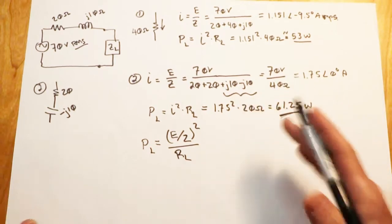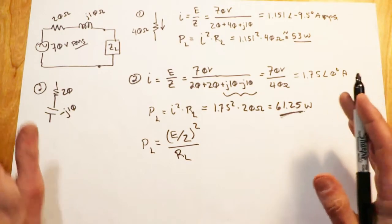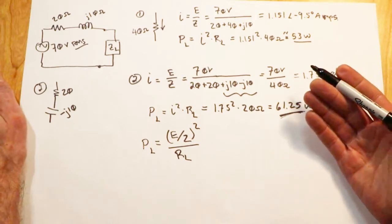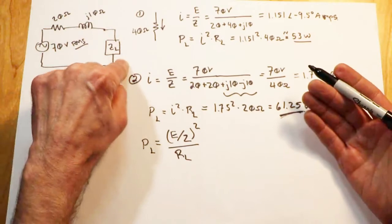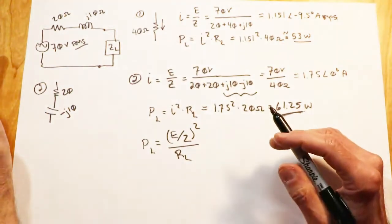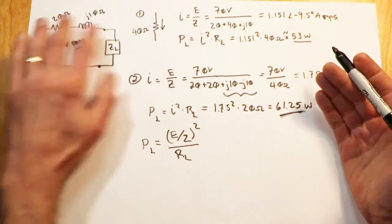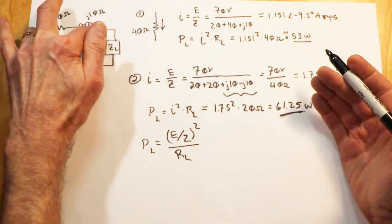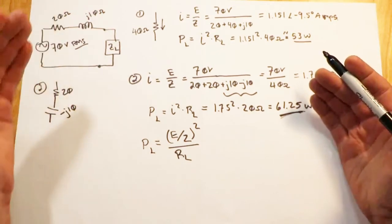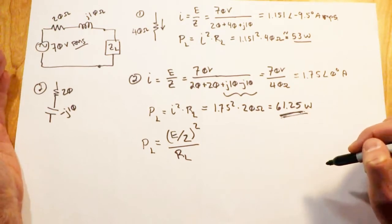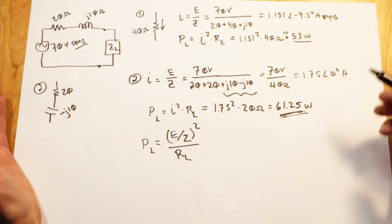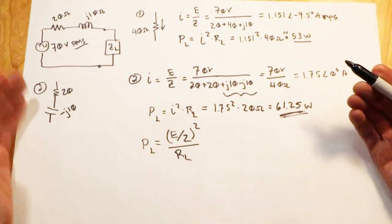Now again that gives us maximum power. That doesn't mean we always want to have maximum power. There is an issue with this. Basically the issue is efficiency. When we have this case, when we have the complex conjugate for the load, we wind up with a similar situation that we had in DC. In other words, you're going to lose half of the generated power in the generator. Remember, this resistor and this resistor are the same size. There's your 20 and there's your 20. So whatever you have, for example 61 and a quarter, well there's 61 and a quarter dissipated back here too. So you're only getting 50% of what's actually being produced, what's being generated.